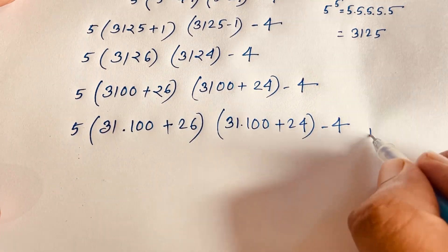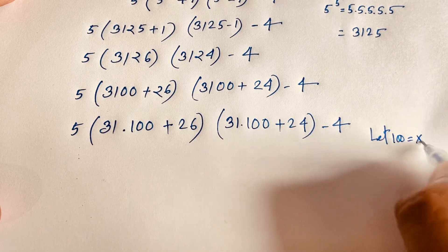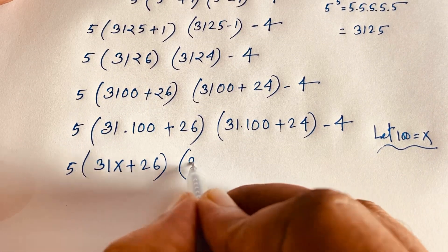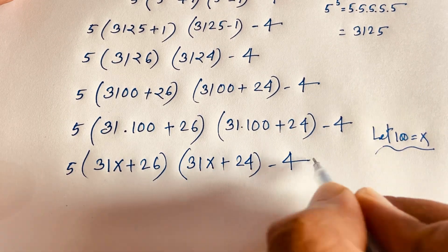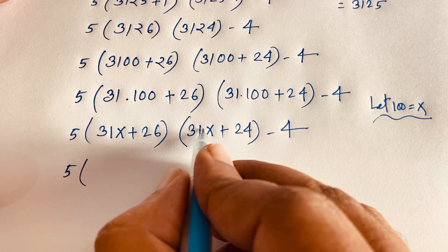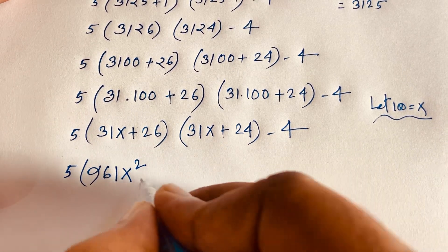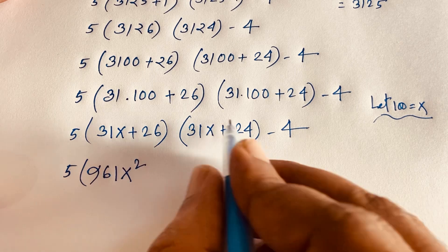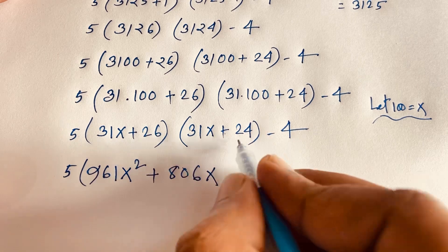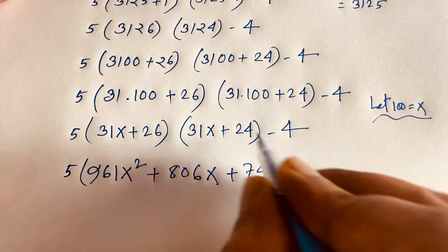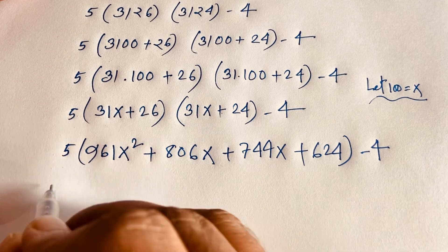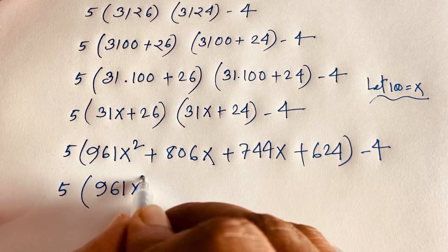We can factor further: (3100 + 26) = (31 times 100 + 26) and (3100 + 24) = (31 times 100 + 24). Let x equal 100, so this becomes 5 times (31x + 26)(31x + 24) minus 4. Expanding: (31x + 26)(31x + 24) gives 961x squared plus 806x plus 744x plus 624, and factoring out 5 gives 5 times (961x squared plus 1550x plus 624) minus 4.